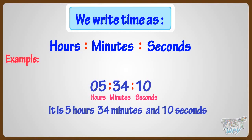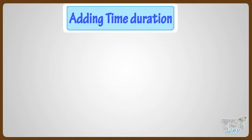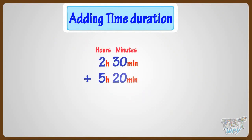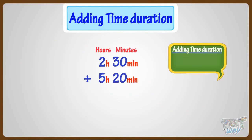Now we will learn how we can add time. We have to add 2 hours and 30 minutes to 5 hours and 20 minutes. While adding time, the simple rule is to add hours with hours and minutes with minutes.